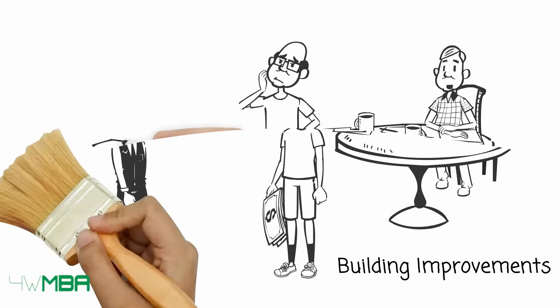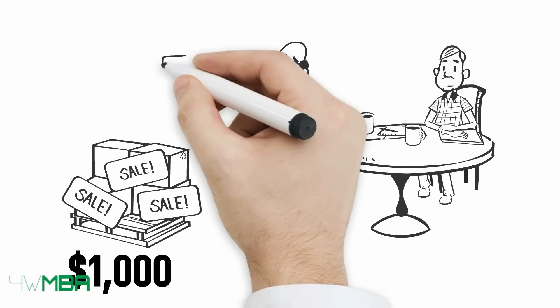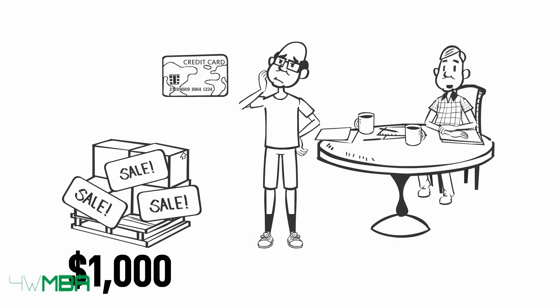Jim buys clothes for 1,000 dollars with credit card. The payment will be processed in 30 days. This transaction will generate an account payable on Jim's balance sheet.